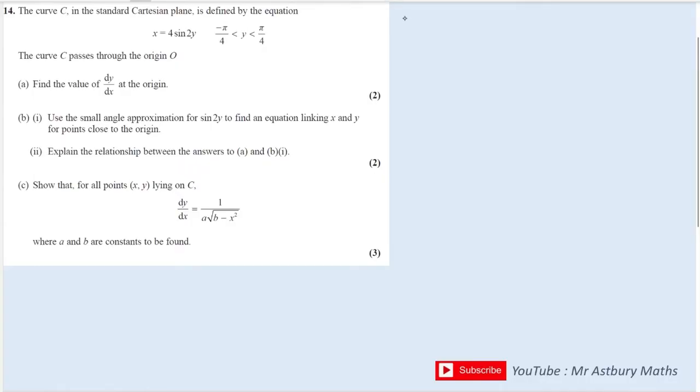Okay, quickest way of doing this is to differentiate with respect to y. So I'm going to say dx by dy is equal to, well, if I differentiate this function, I know that sine differentiates to cos. The input is 2y, so I differentiate that to get 2, times it by the 4, so I get 8.